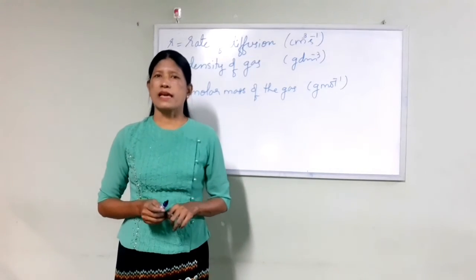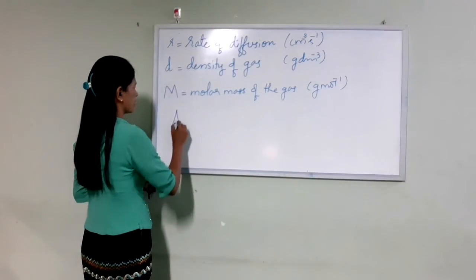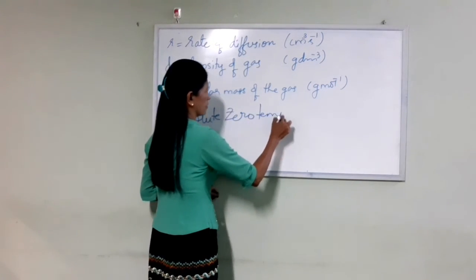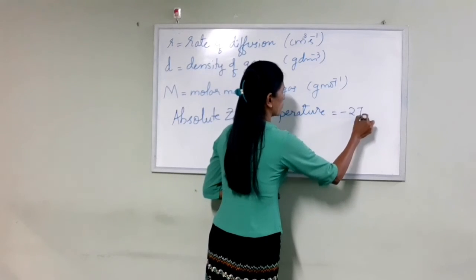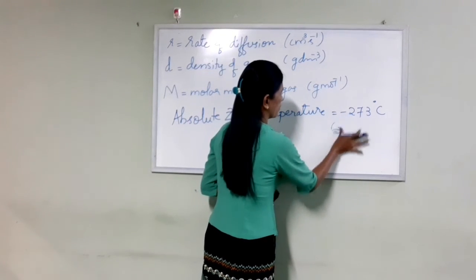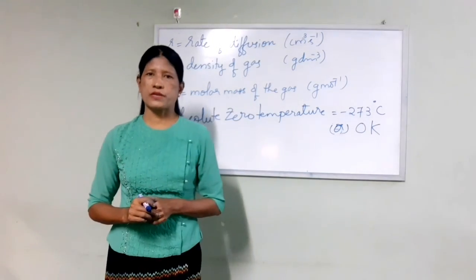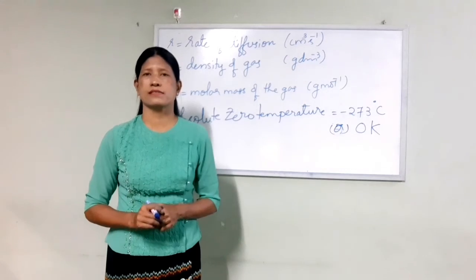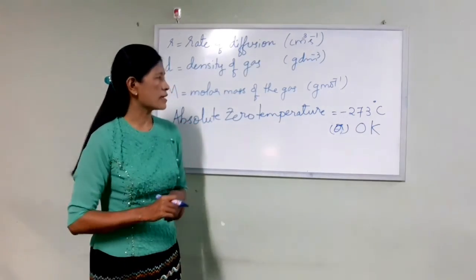This is the absolute zero temperature. Absolute zero temperature is minus 273 degrees Celsius. The volume of all gases will be zero at absolute zero temperature, which is minus 273 degrees Celsius.